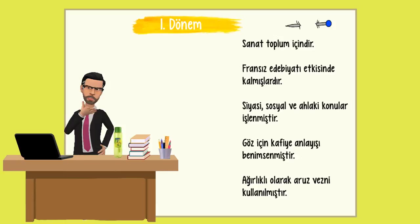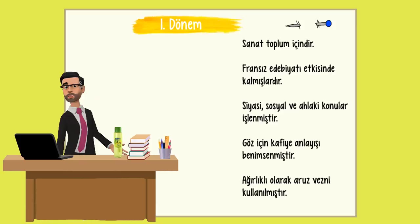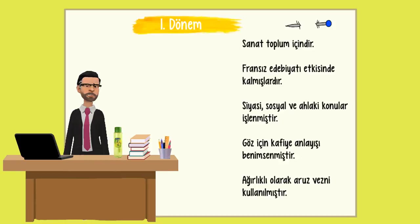İlk olarak 1. Dönem özelliklerine bakalım. Sanat toplum içindir anlayışı hakimdir. Fransız edebiyatı etkisinde kalmışlardır. Siyasi, sosyal ve ahlaki konular işlenmiştir. Göz için kafiye anlayışı benimsenmiştir. Ağırlıklı olarak aruz vezni kullanılmıştır.